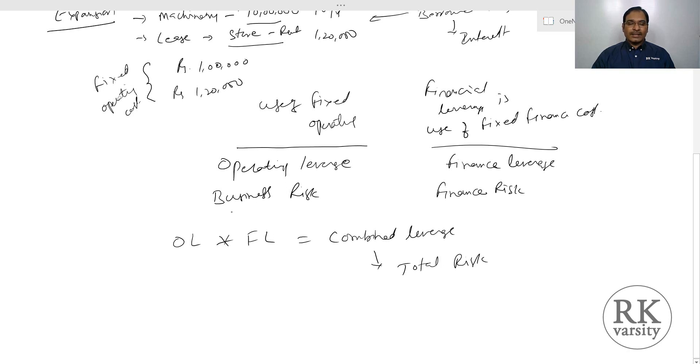So these three concepts: operating leverage measures part or proportion of business risk, whereas financial leverage measures the finance risk and combined leverage measures the total risk.